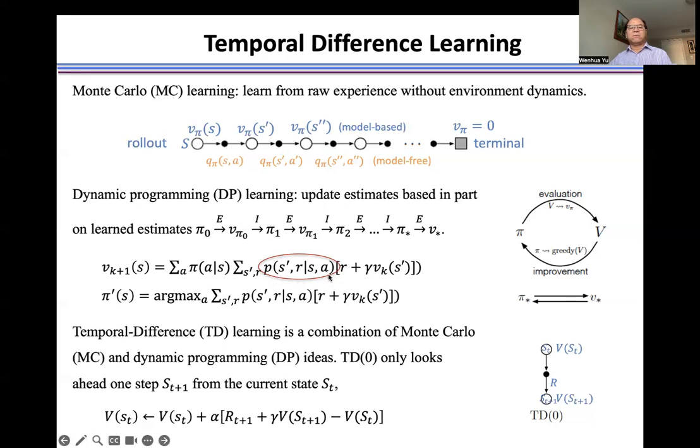Here, for example, if we know the state transition probability, we can start from arbitrary policy and then calculate the return. We calculate the expected state value function. And then we use this state value function to improve the policy.